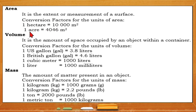Volume is the amount of space occupied by an object within a container. The conversion factors for the units of volume are: one US gallon equals 3.8 liters, one British gallon equals 4.6 liters, one cubic meter equals 1000 liters, and one liter equals 1000 milliliters. These conversion factors are very important, so you must be able to familiarize with them so that you can convert one unit to another.